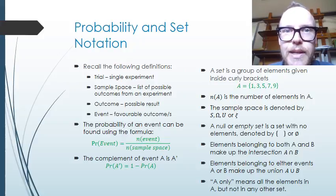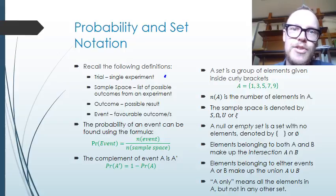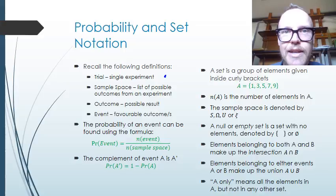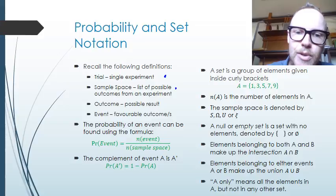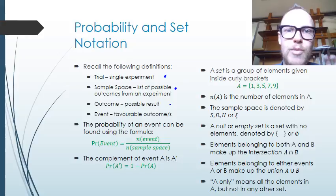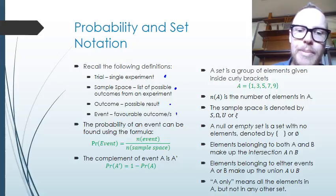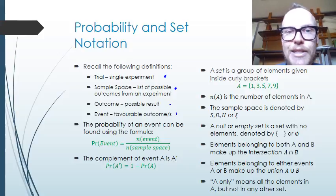Remember the following definitions: a trial is a single experiment, like flipping a coin. The sample space is the list of possible outcomes, so for a coin it would be heads and tails, or for rolling a die it's values one to six. The outcome is any one possible result. An event is the favourable outcome or outcomes, so the favourable outcome for rolling a die might be to roll greater than a four.